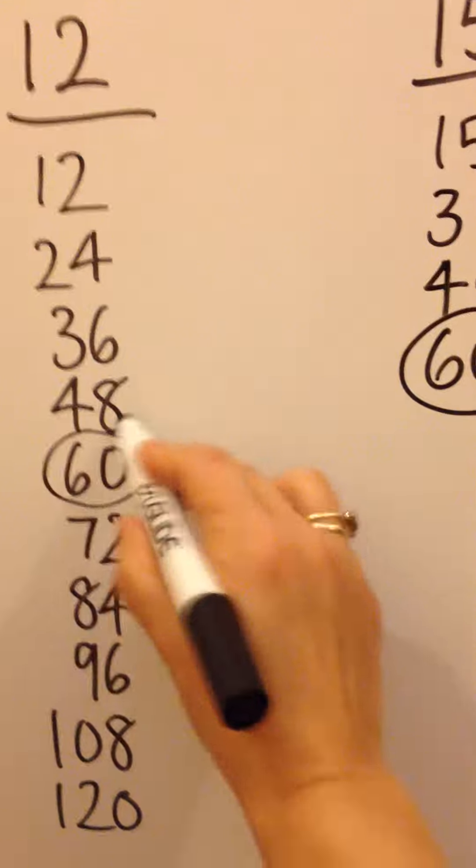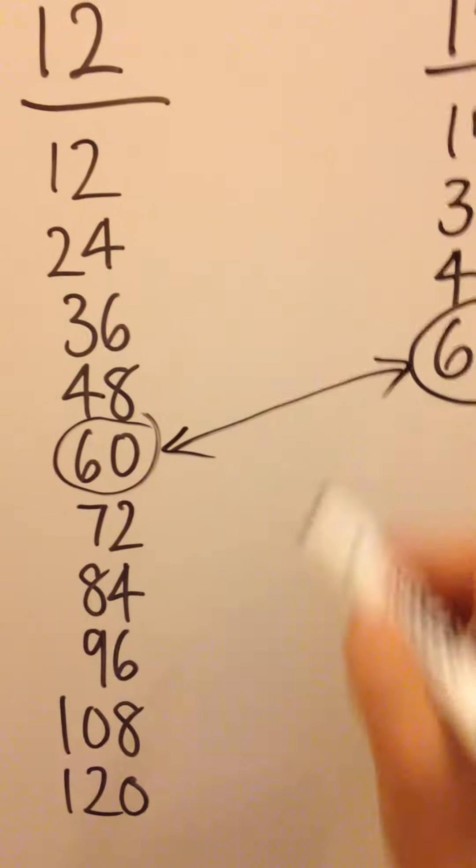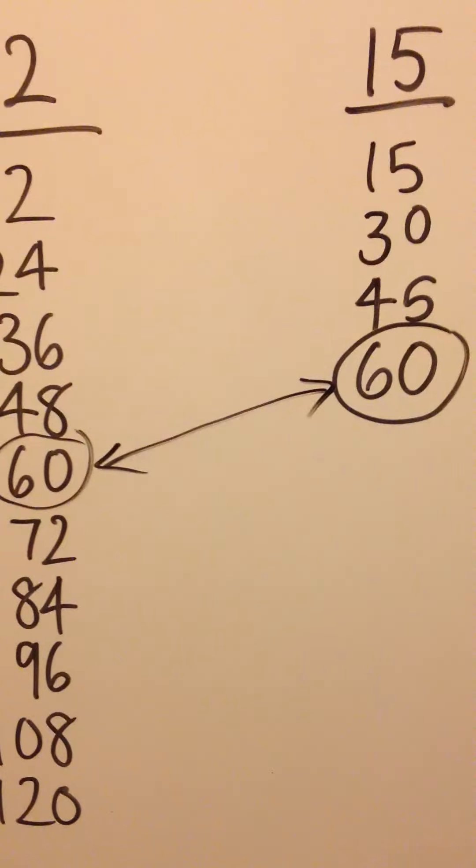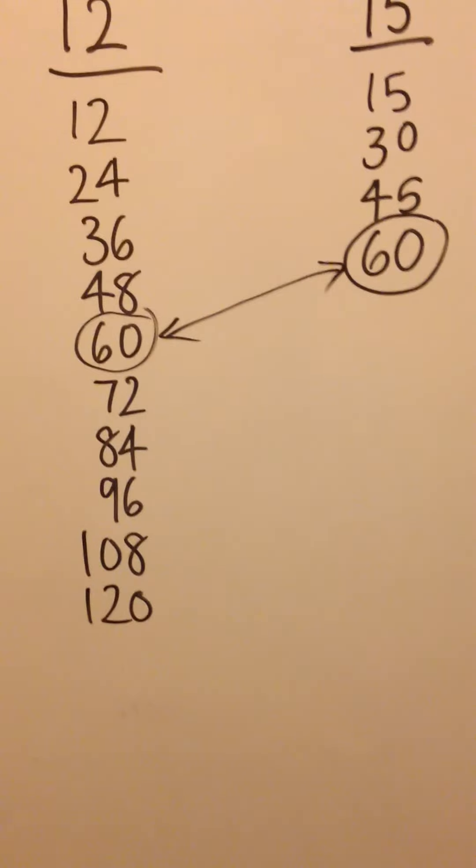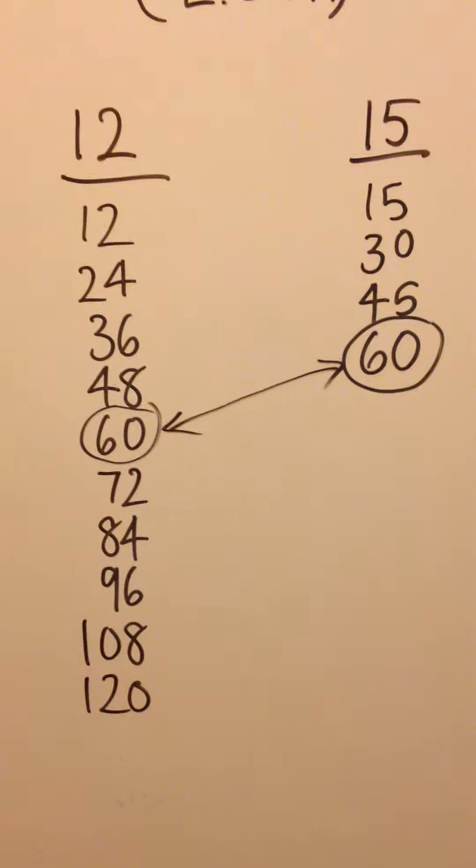Instantly, I spot it's over there. So that is a common multiple, and it's the lowest one, as I haven't gone any further on the 15s. The lowest common multiple of 12 and 15 is 60.